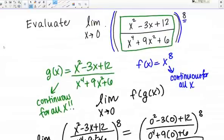So in this case, I was able to use the fact that I know this function is continuous to calculate the limit, simply by plugging in X equals 0 to the function.